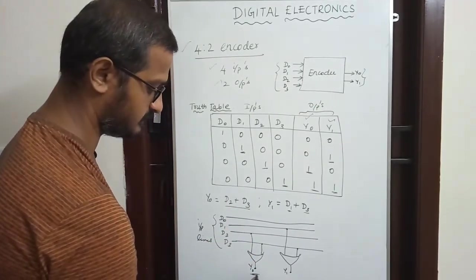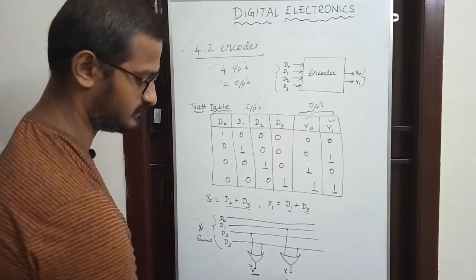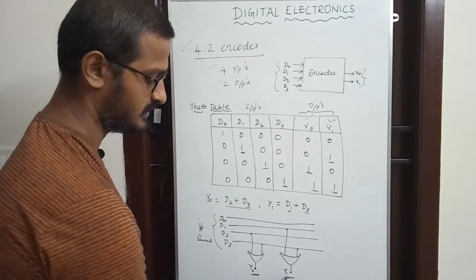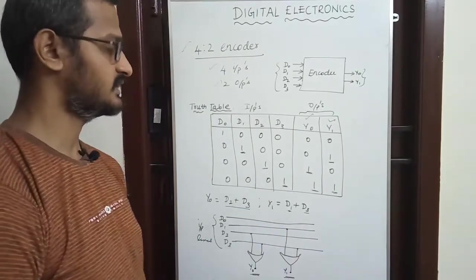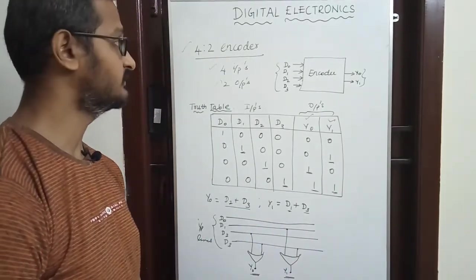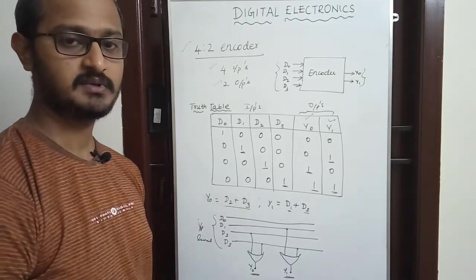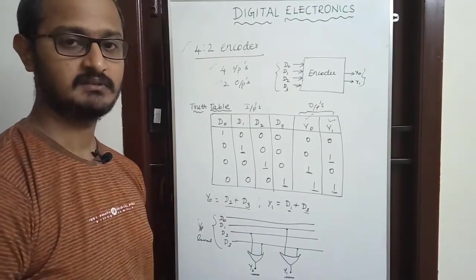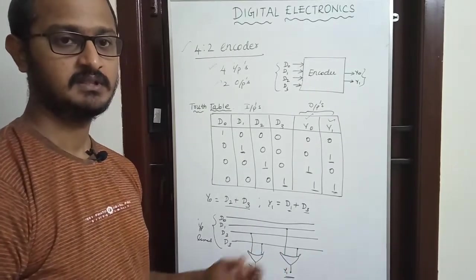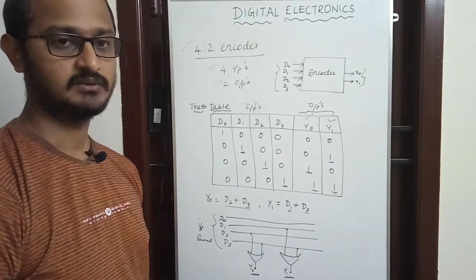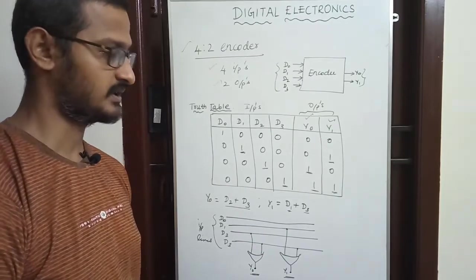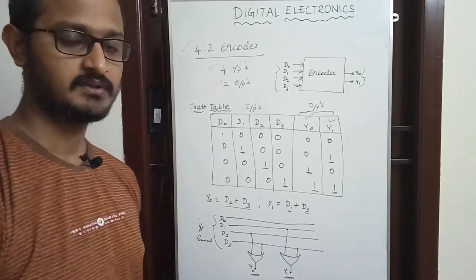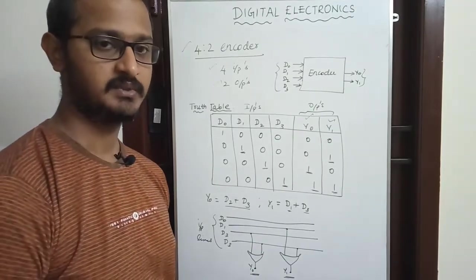So the 4-to-2 encoder is straightforward. If you reverse it, you get a 2-to-4 decoder. Next we will look at the decoder.